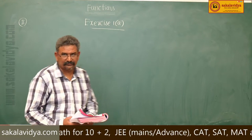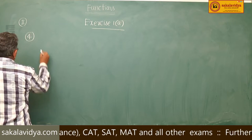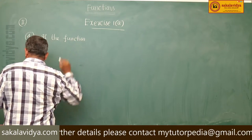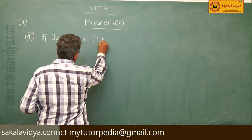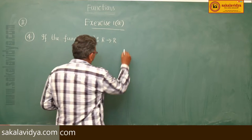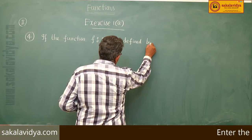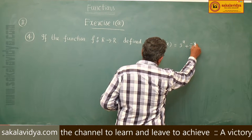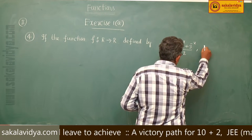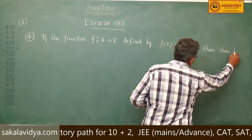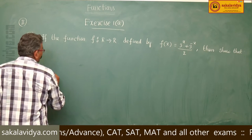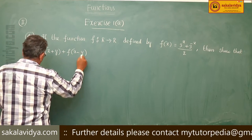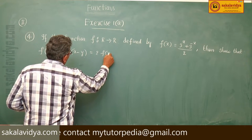Problem number 4: If the function f maps R to R defined by f(x) = (3^x + 3^(−x)) / 2, then show that f(x+y) + f(x−y) = 2·f(x)·f(y).